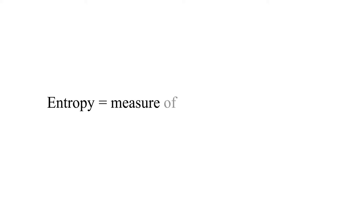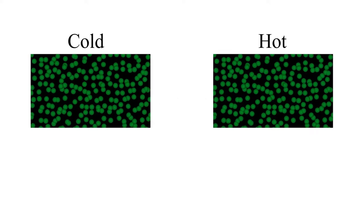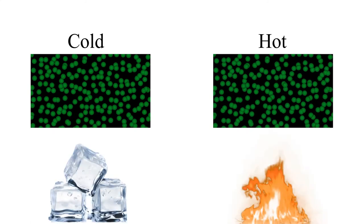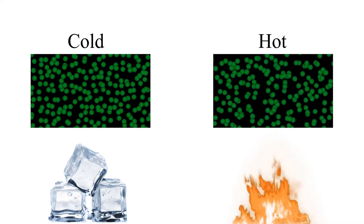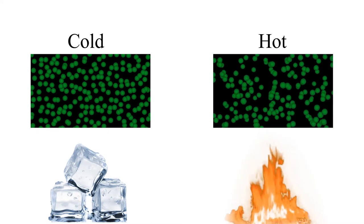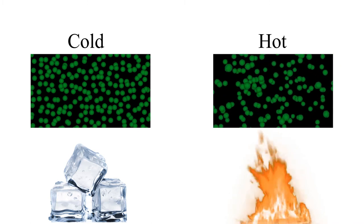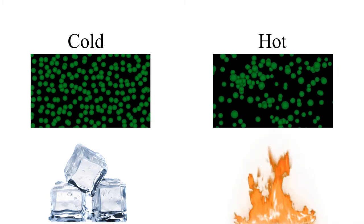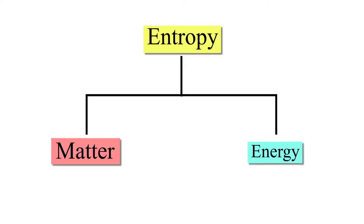More accurately, it is the measure of molecular randomness or disorder. As you can see on the screen, molecules of the given substance are dispersing more and becoming more disorderly when energy is provided. Therefore, entropy is the amount of randomness or disorder in the arrangement of molecules, and it exists in the case of both matter and energy.